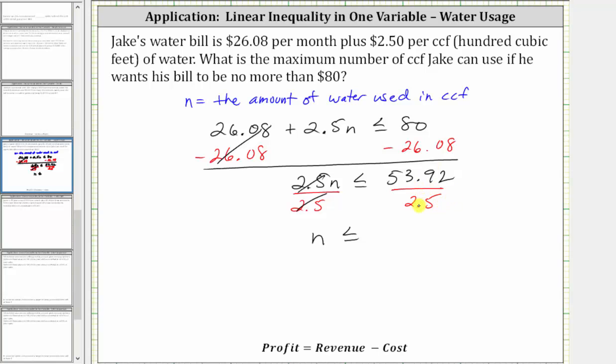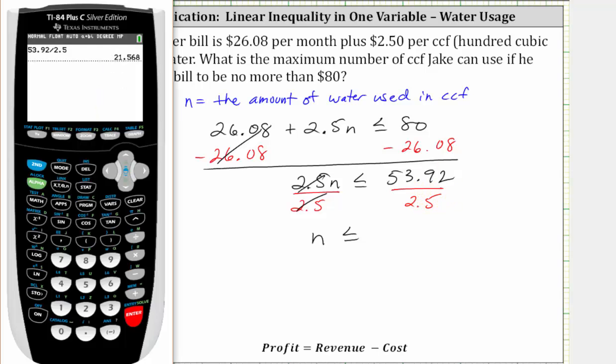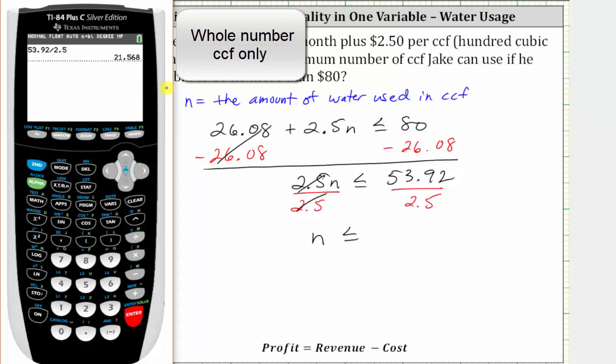Let's find this quotient on the calculator. Looking at the quotient, we might be thinking we should round up to 22, but if we round up, then the water bill is going to be more than $80, and therefore we have to round down to 21. So N, the amount of water used in CCFs, must be less than or equal to 21.